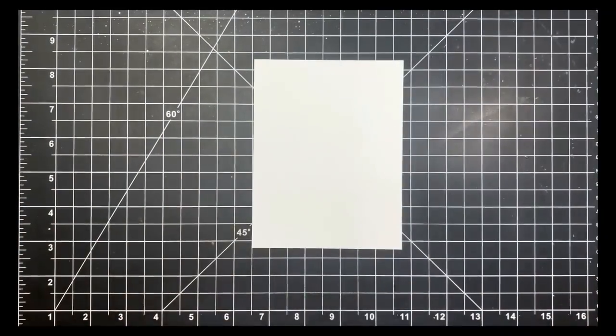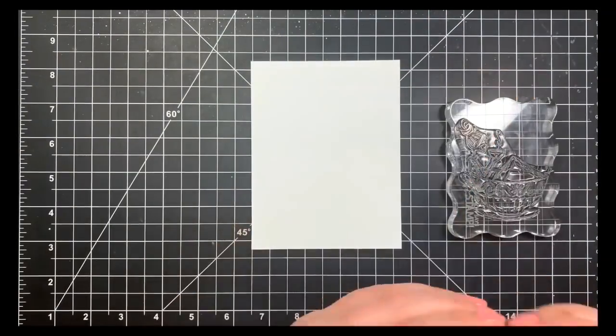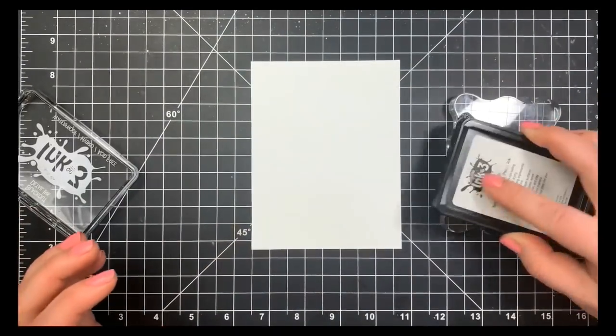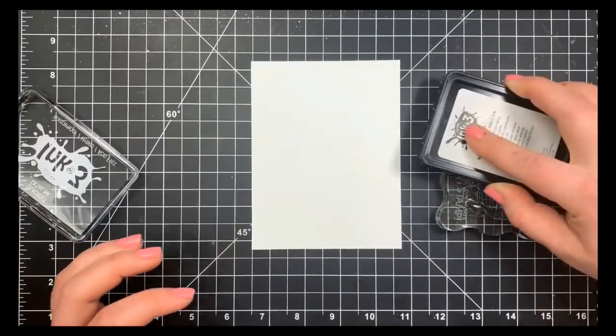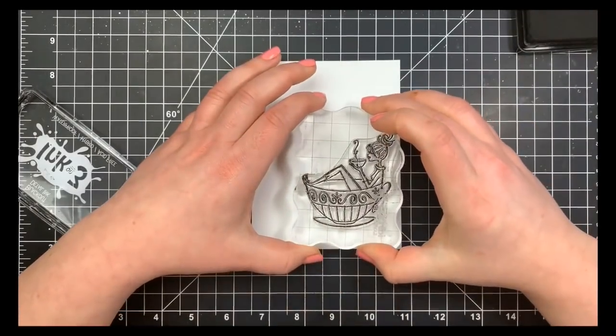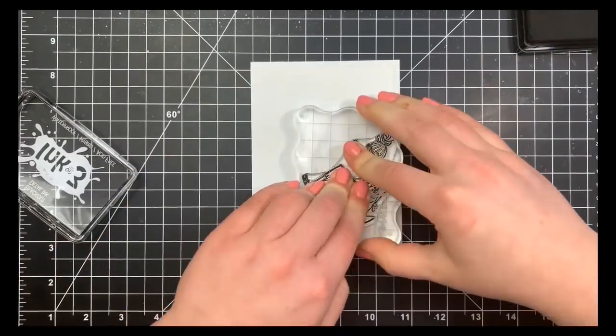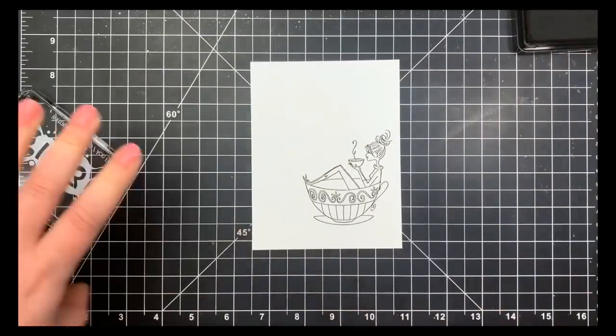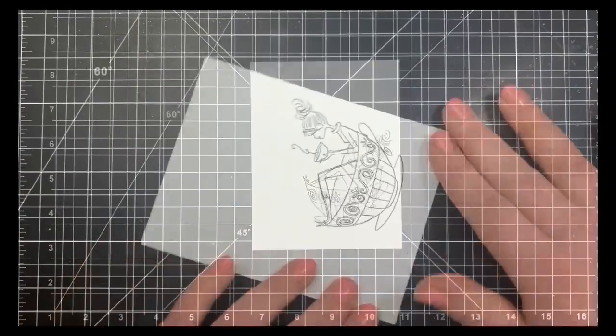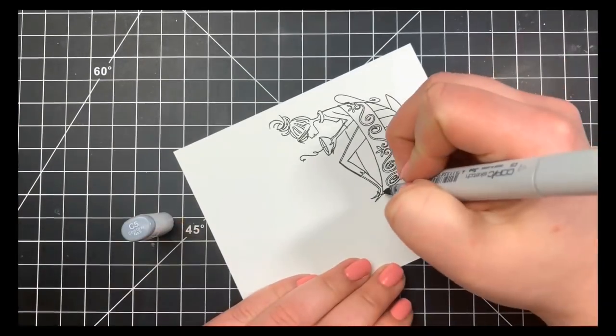Hey guys, it's Courtney and I am creating a very quick clean and simple card using the Cup of Java stamp set by Penny Black. This will be a one-layer card, so I have a piece of Neenah Solar White 80 pound cardstock cut down to four and a quarter by five and a half. I'm just going to stamp my image and we'll move right in with the Copic coloring.